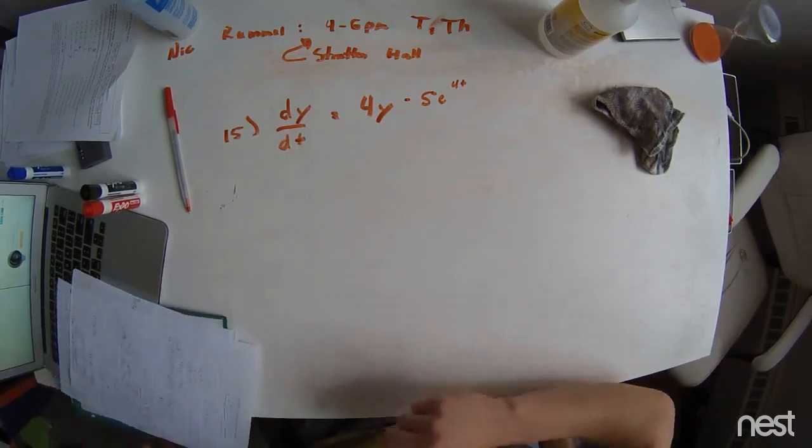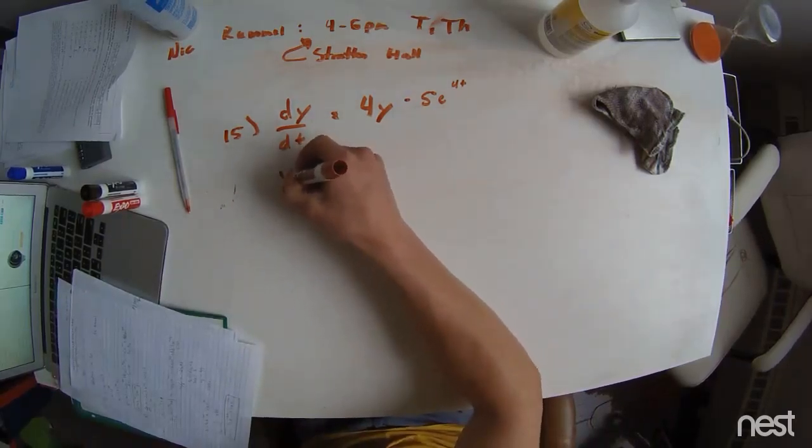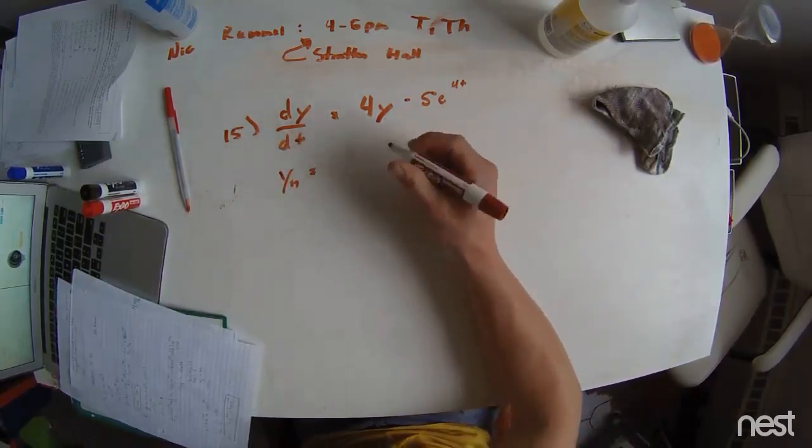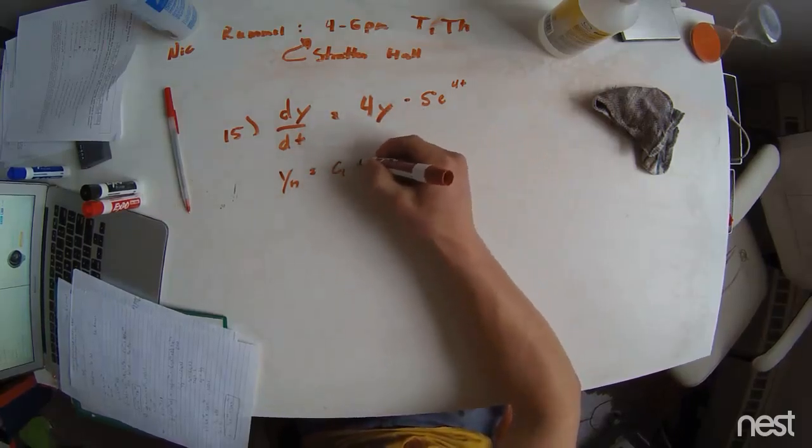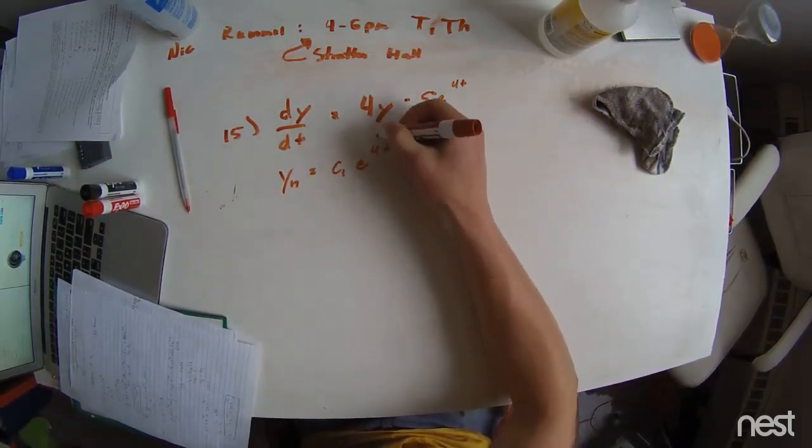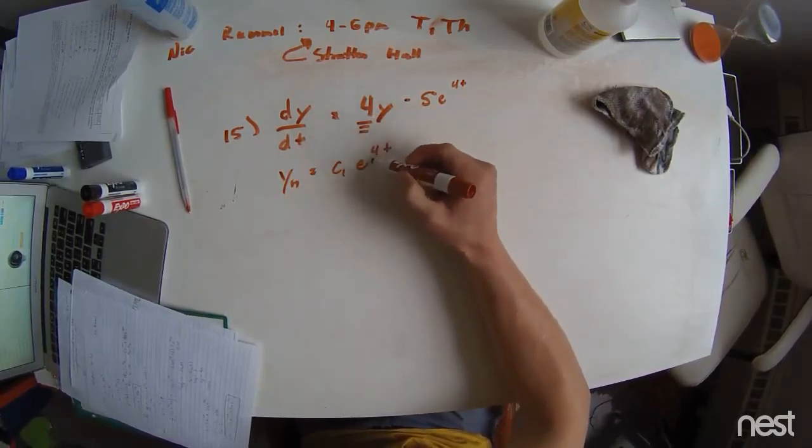We're going to start off this problem by solving the homogeneous case, because this is the method of undetermined coefficients. And we have C1 times e to the 4t, because we see this term right here, which is going to tell us that there's going to be a 4t up here.